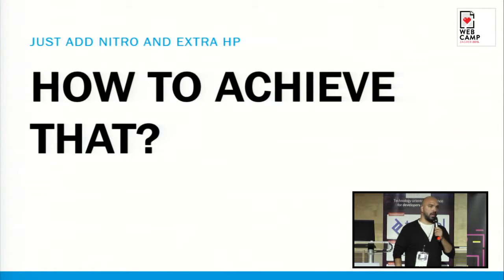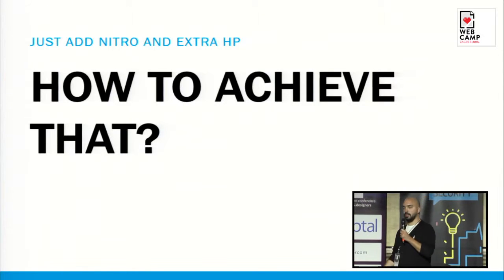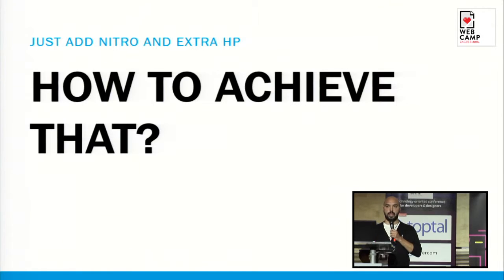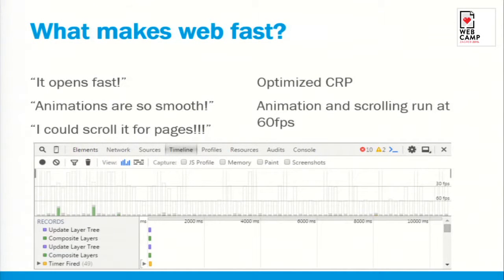So what do we have to do to achieve that — how to make it fast enough to give them a great experience? If the web opens fast, most probably the critical rendering path is optimized. And if the web works smooth, animations and scrolling obviously run at 60 frames per second.